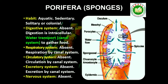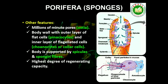These are primitive multicellular animals and have cellular level of organization. Sponges have a water transport or canal system. Water enters through minute pores, ostia, in the body wall into a central cavity, spongocoel, from where it goes out through the osculum. This pathway of water transport is helpful in food gathering, respiratory exchange and removal of waste. Choanocytes or collar cells line the spongocoel and the canals. Digestion is intracellular. The body is supported by a skeleton made up of spicules or spongin fibers.